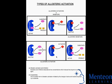Effectors that enhance the protein's activity are known as allosteric activators, while those that decrease the protein's activity are called allosteric inhibitors.